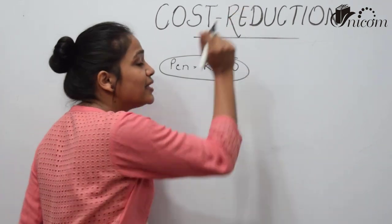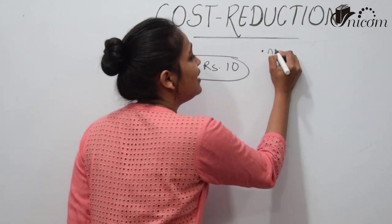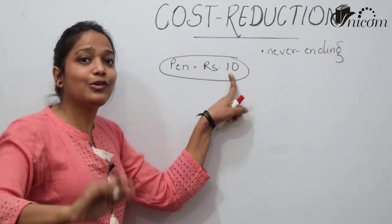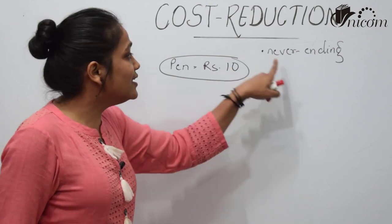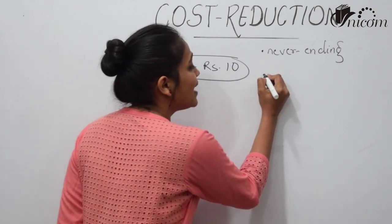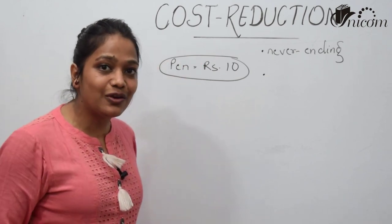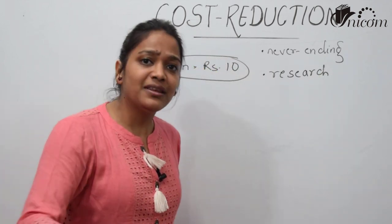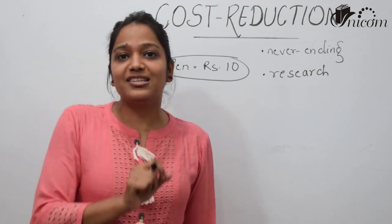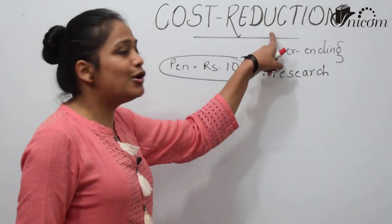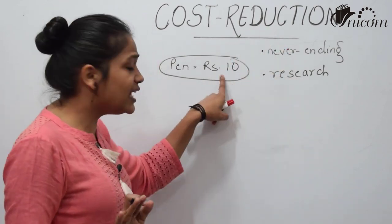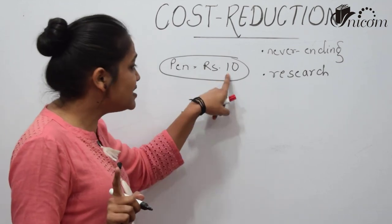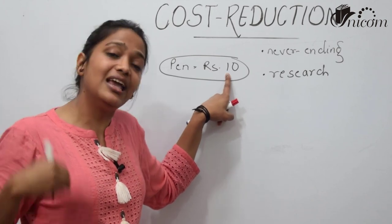Cost reduction is never-ending. You should not think that since the cost is 10 rupees per unit, we will not try to reduce it further. There is no set standard or fixed minimum in cost reduction. Through further research, you continuously identify where cost can be reduced. There is no fixed standard — it is a never-ending process of trying to further reduce cost.